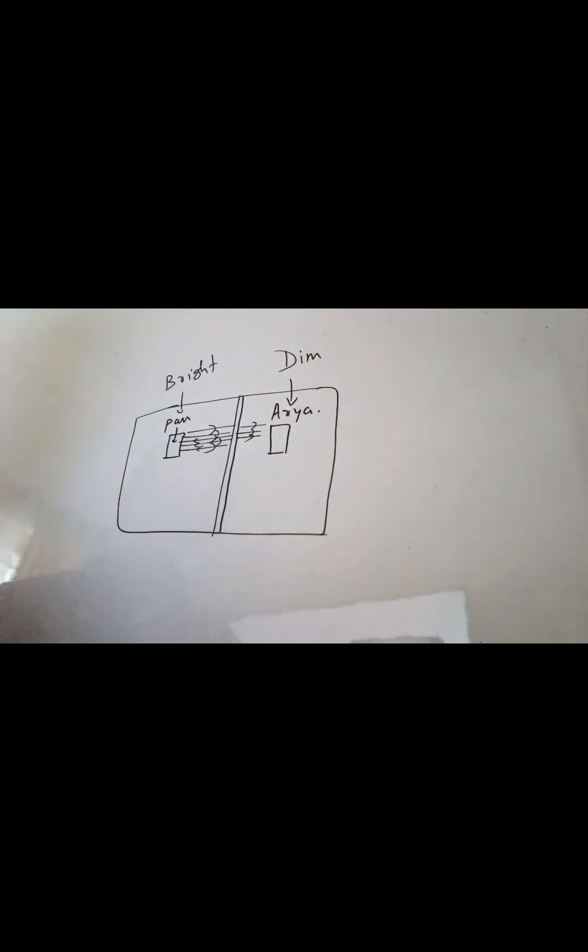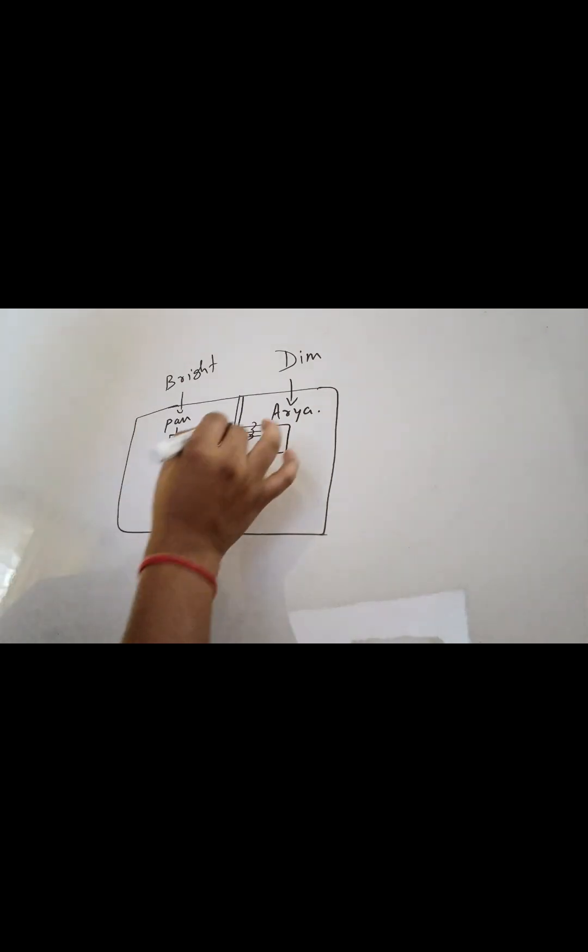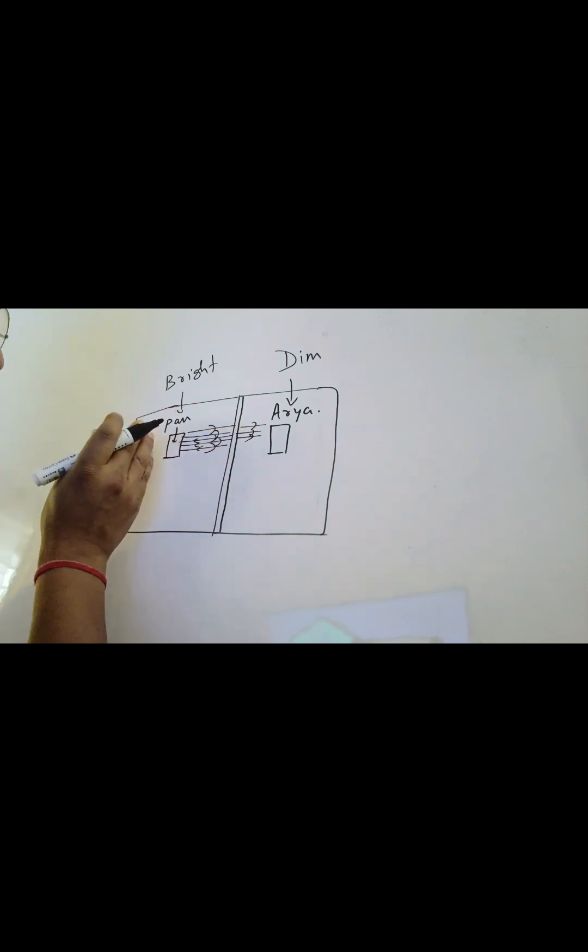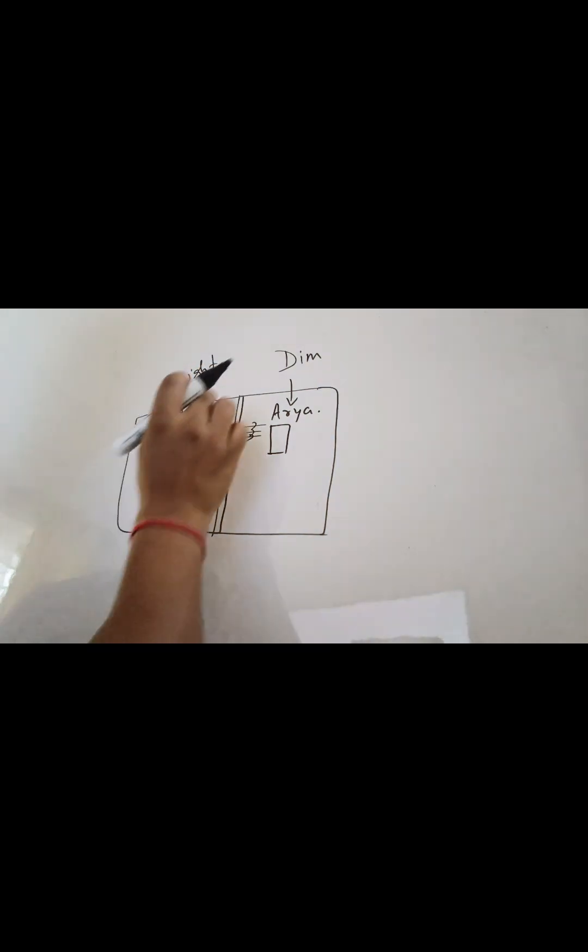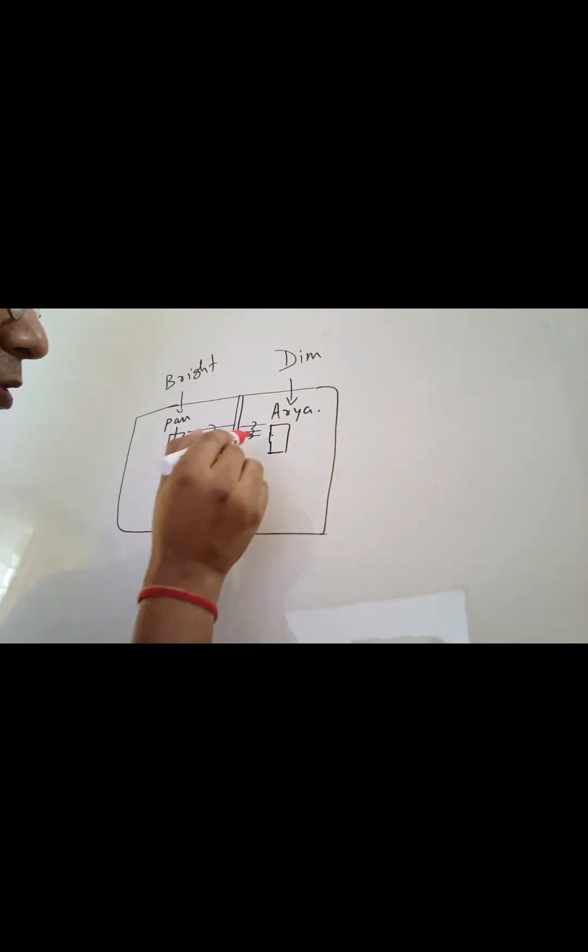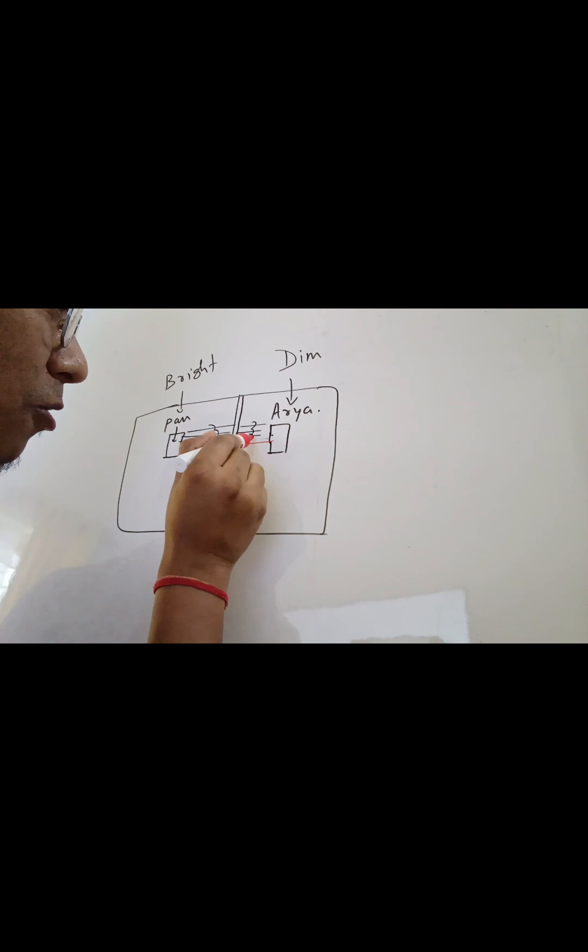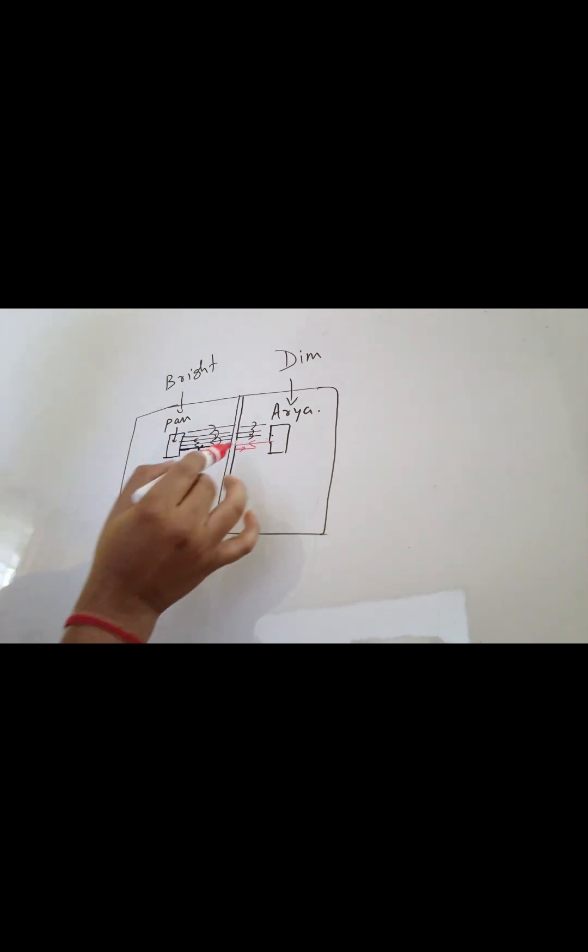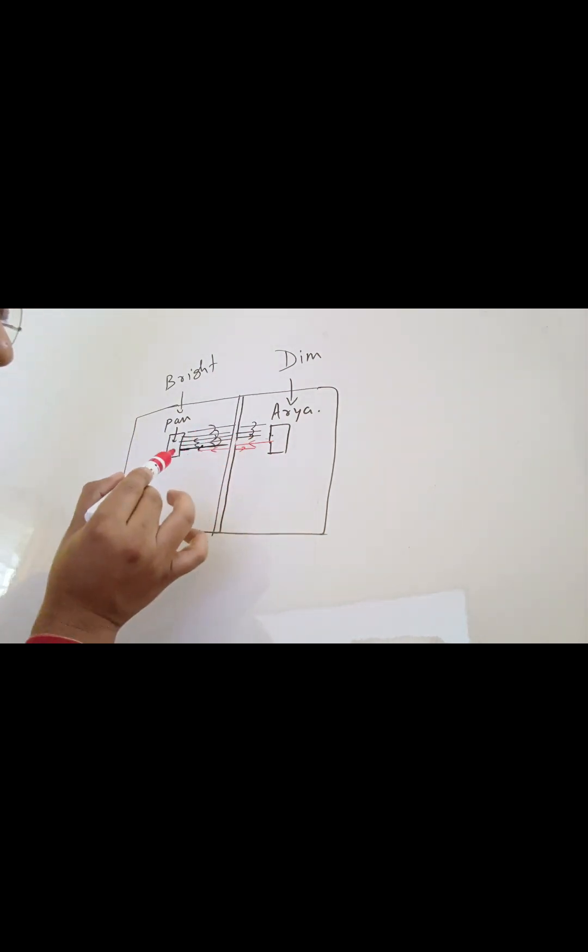So when this light hits, some of this will come out, right? And then some of that will be reflected. So let's say 50% came out, 50% is reflected. So remember this is the light from Pankaj sir's face and this reflected light is also from Pankaj sir's face which came after reflection from this mirror. Now remember Arya is in a very less bright room, therefore very less amount of light will come from this side.